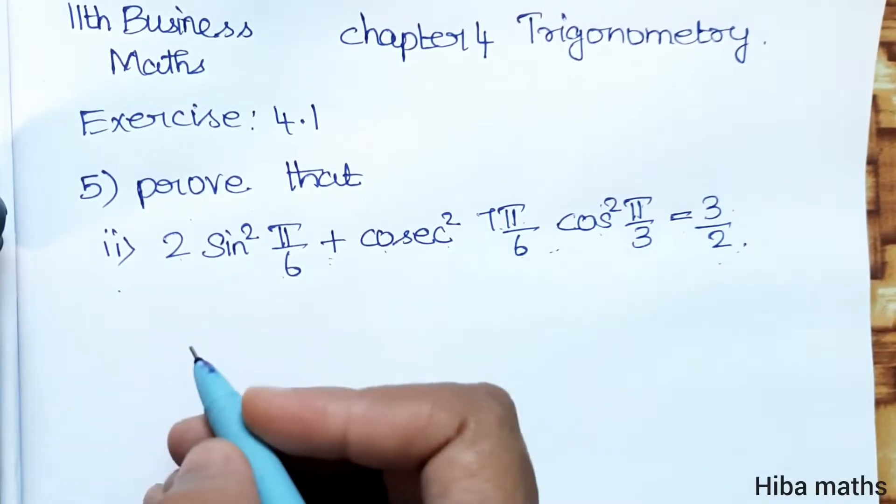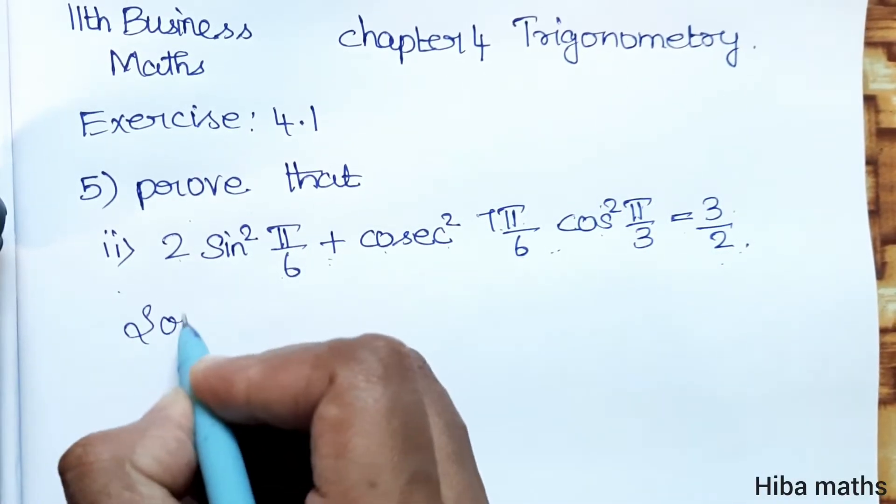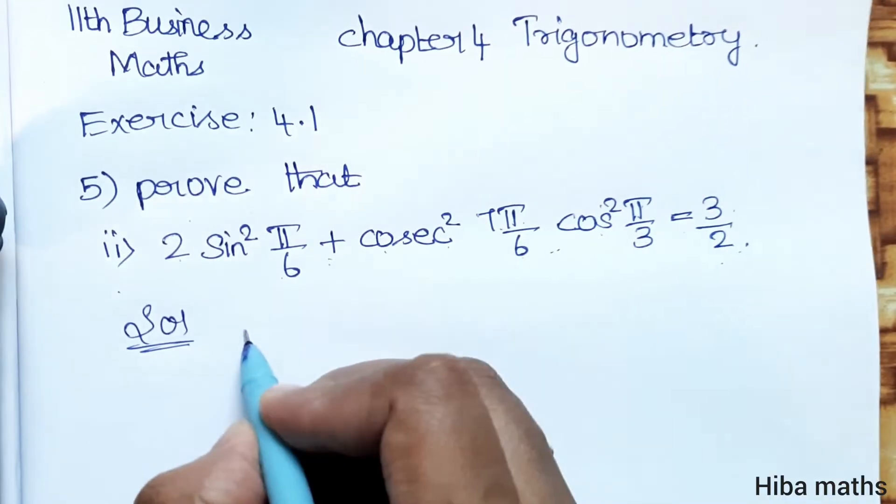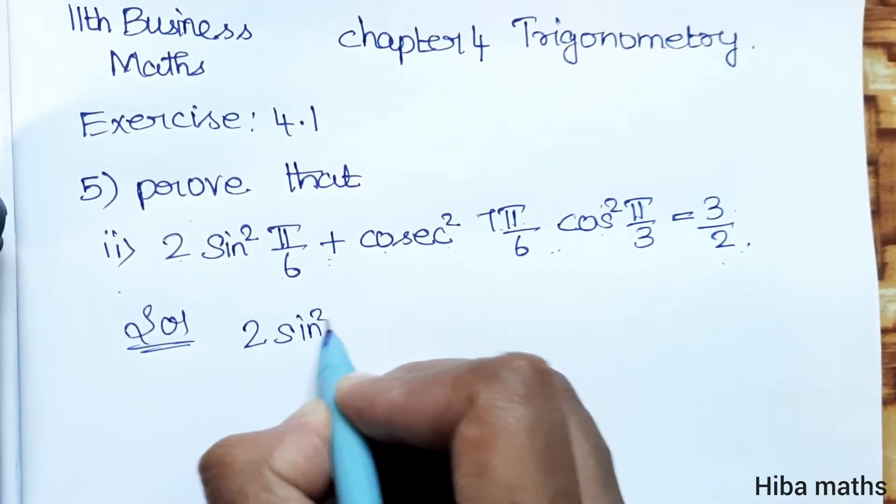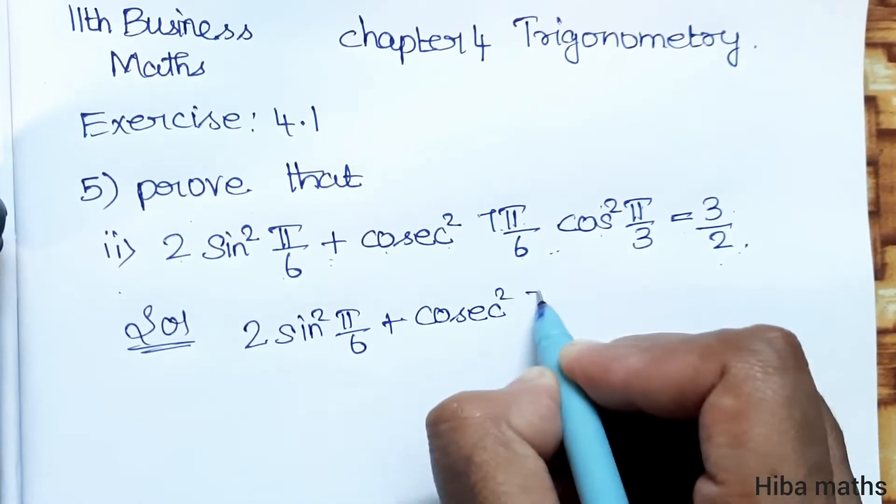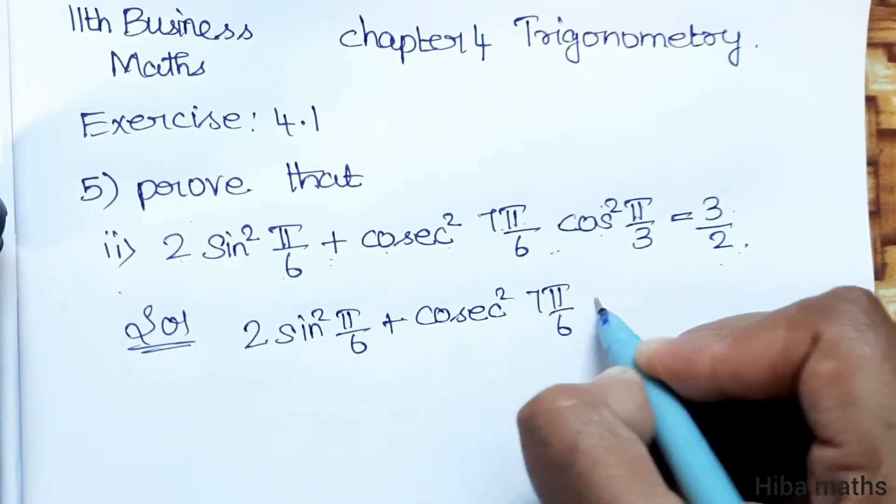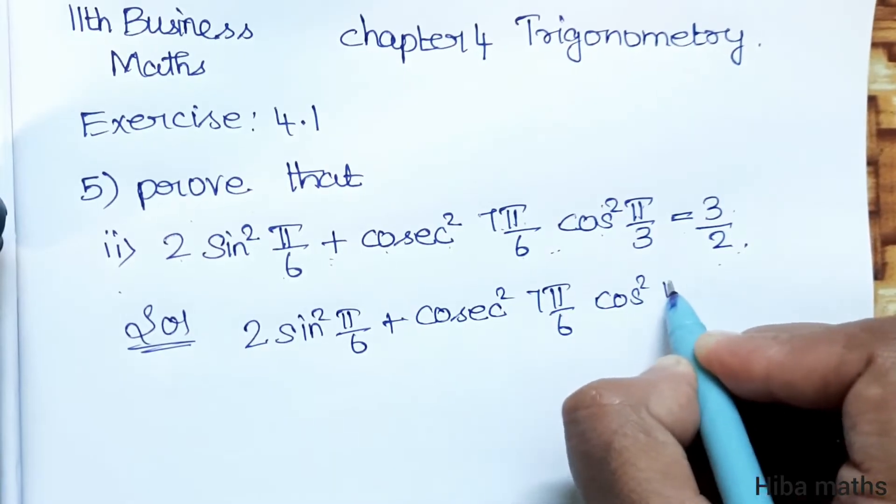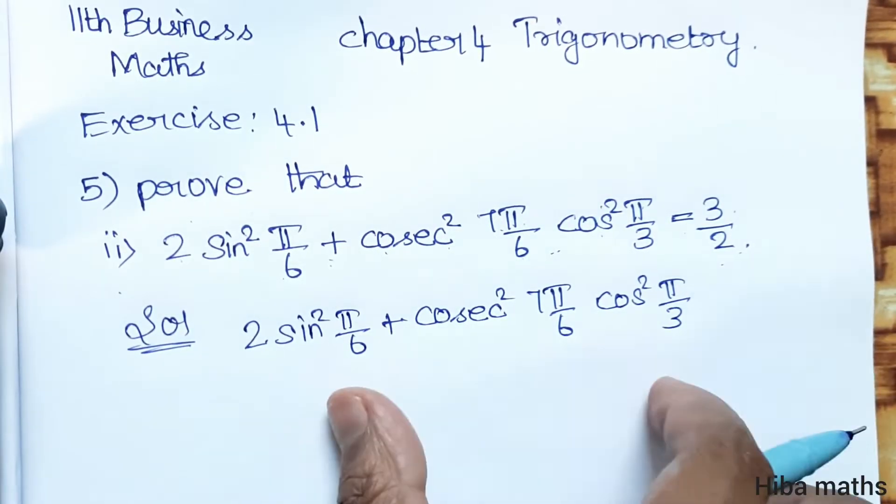The answer is 3/2. Let's solve this proof. First, the given expression is 2 sin²(π/6) + cosec²(7π/6) × cos²(π/3). This is the LHS.